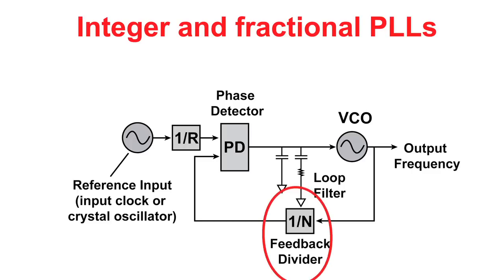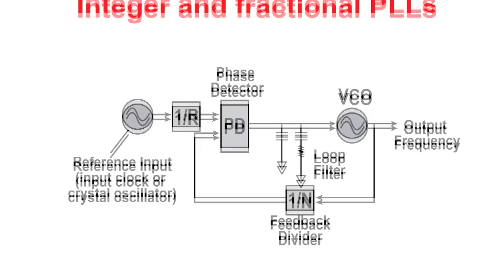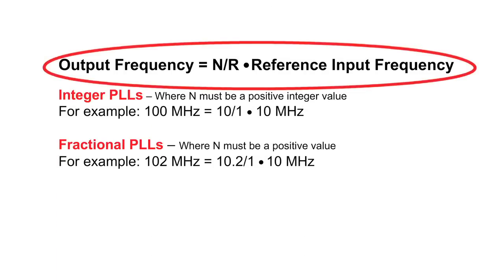For integer PLLs, the value of N is set as an integer value. For fractional PLLs, the value of N can be a non-integer value. The relationship between the values of R and N has a direct impact on the output frequency of the VCO in the PLL circuit. Simply put, the output frequency is equal to N divided by R multiplied by the reference input. When providing different values of R and N, output frequencies can be generated that either are integer or fractional variations of the reference input.